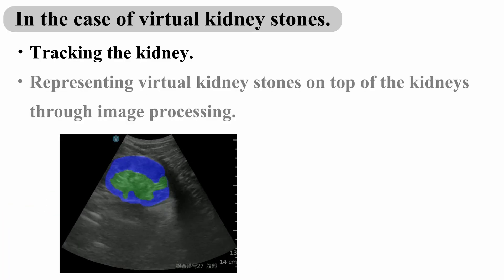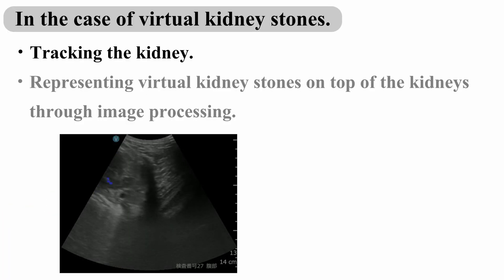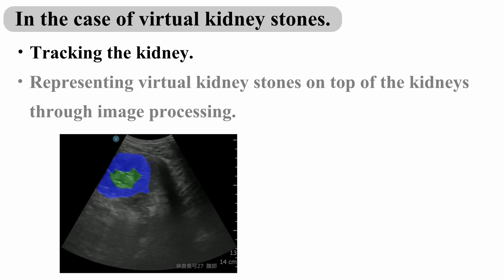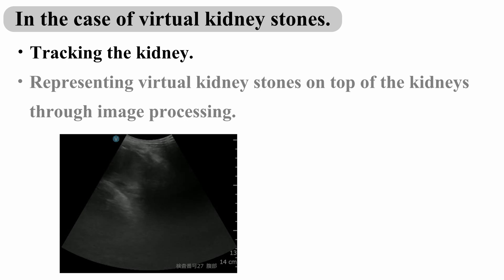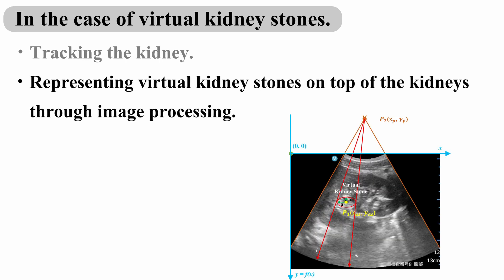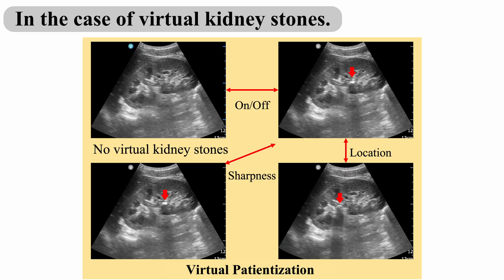In this system, specific organs, such as the kidneys, are tracked from the patient's ultrasound images, and virtual lesions are displayed at the appropriate locations using image processing techniques. When embedding lesions in real time, the presence, size, location, and visibility of the lesions can be adjusted, allowing learners to gain new experiences each time.